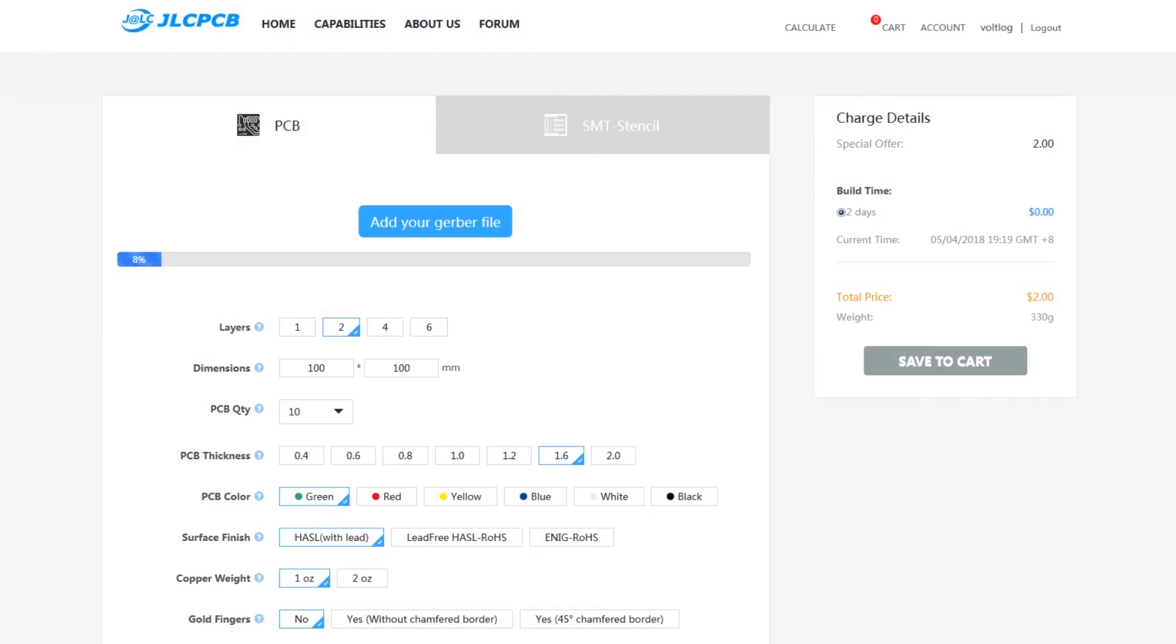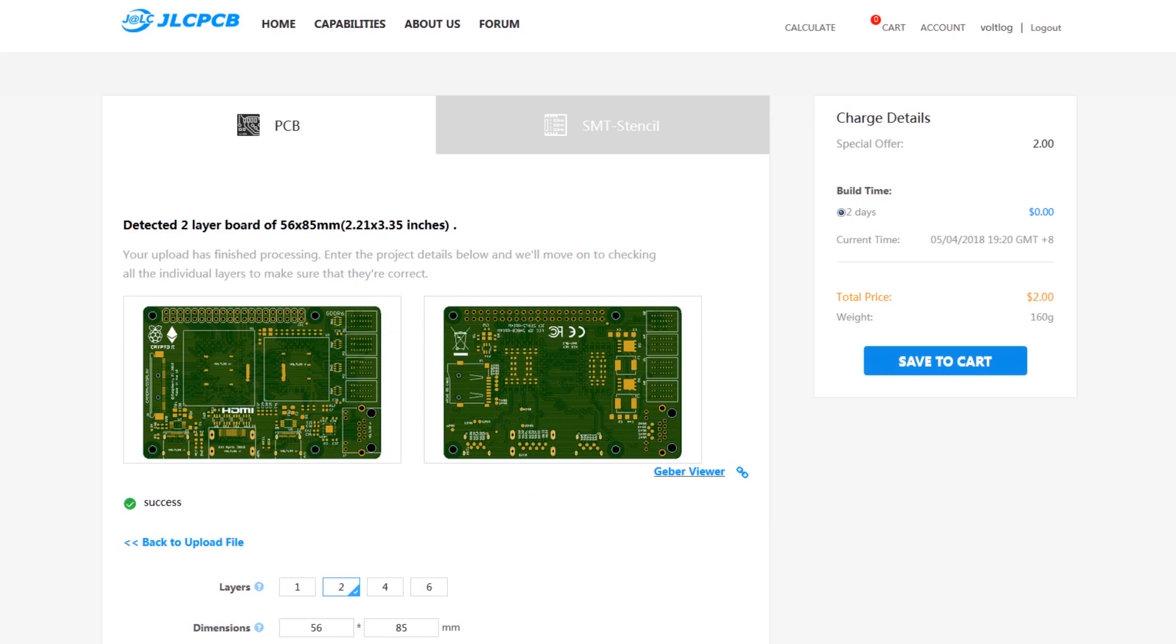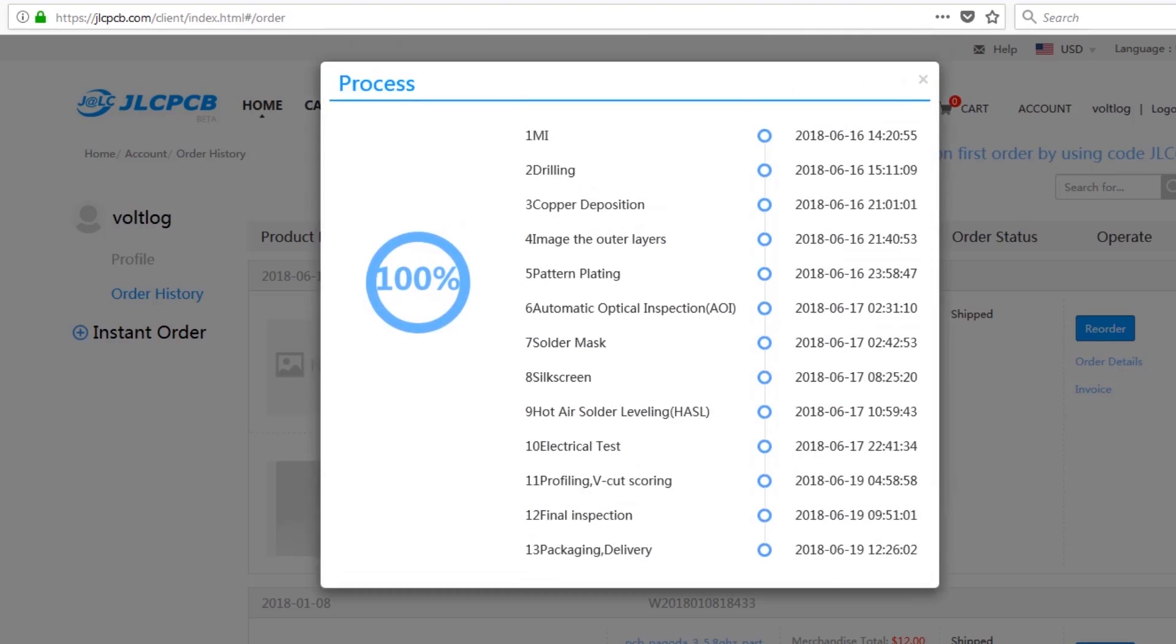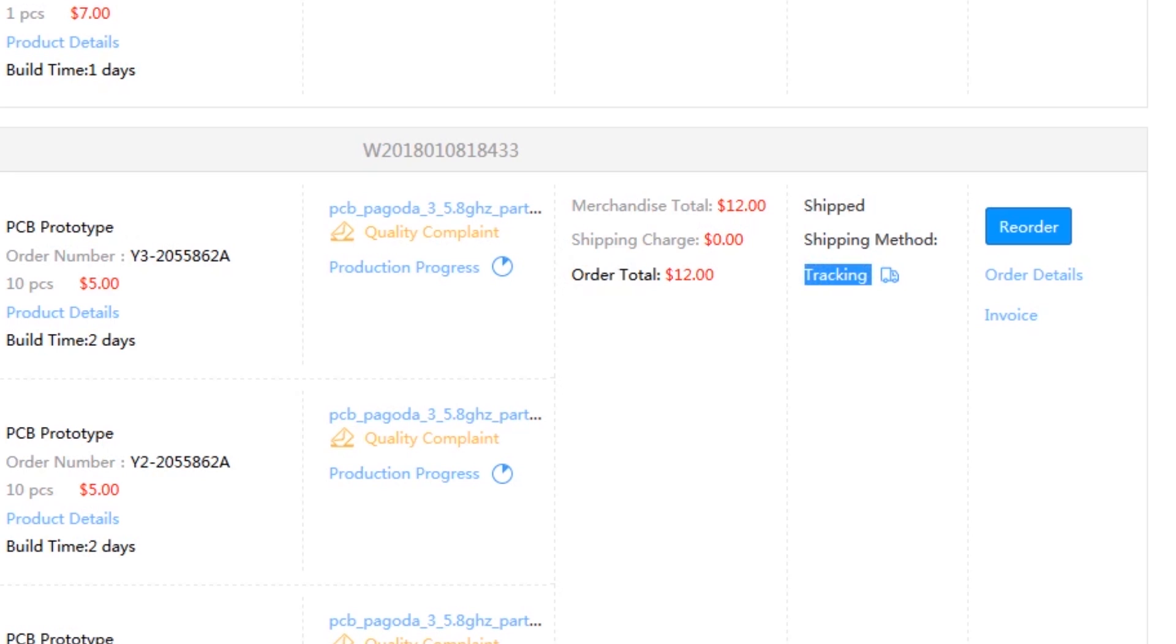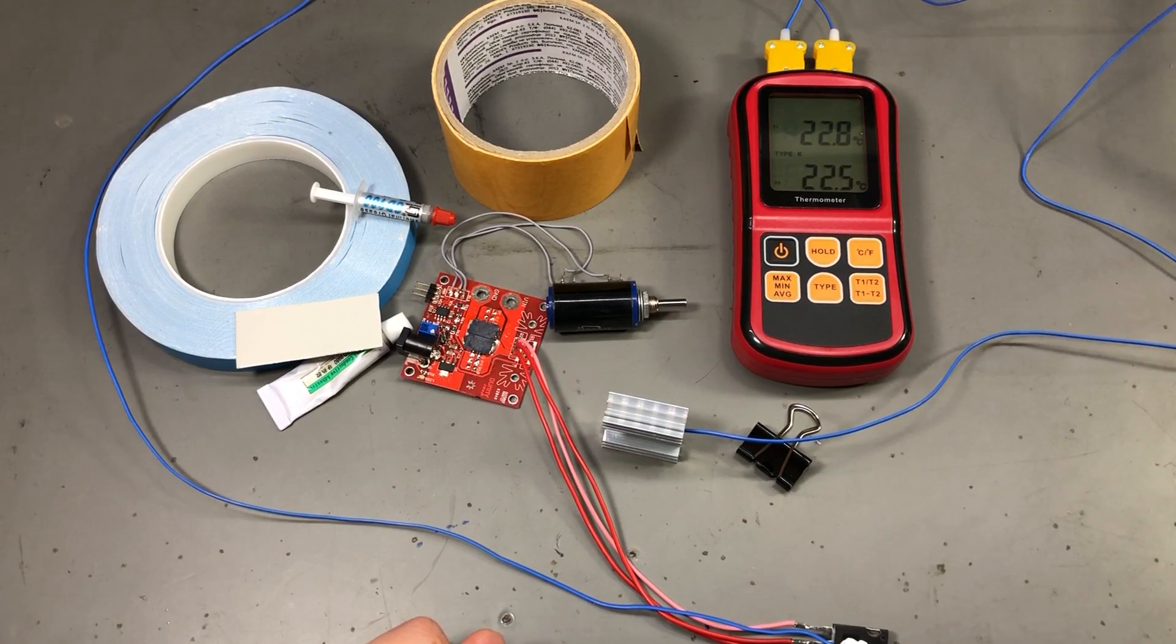This video is sponsored by JLCPCB, a professional manufacturer of printed circuit boards. Their website is modern and has convenient features like easy to use order form with built-in Gerber viewer, production process tracking, package tracking, and single button reorder for previous orders without having to upload Gerber files again.